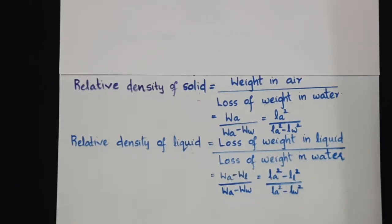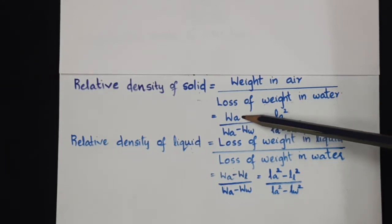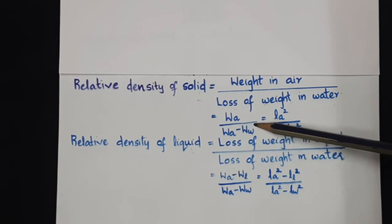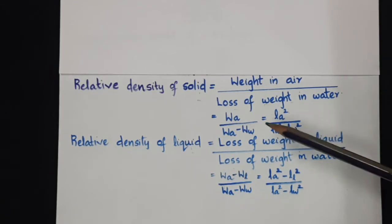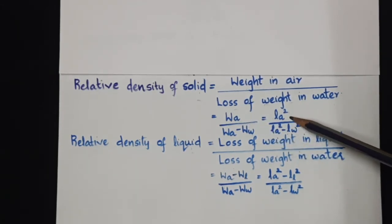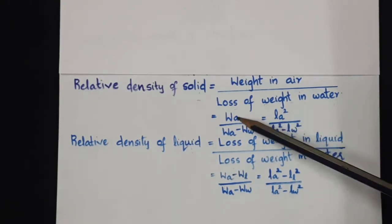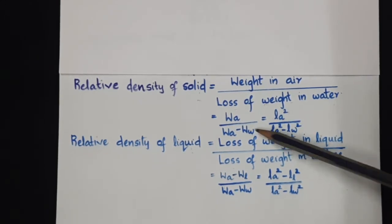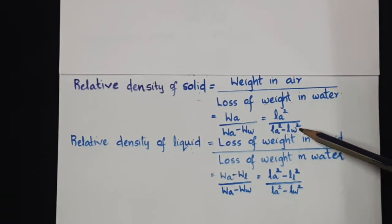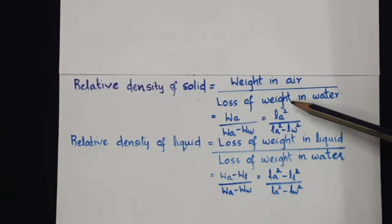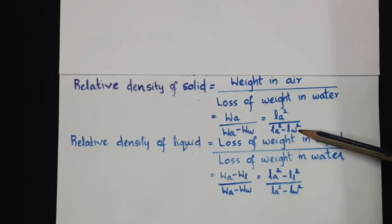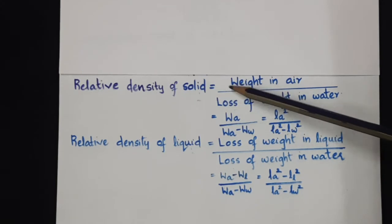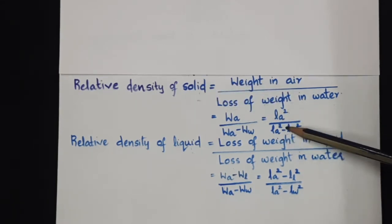The relative density of a solid is defined as weight of a body in air divided by the loss of weight in water. We have already seen that weight is directly proportional to the square of the loop length in the Melody String apparatus. So WA corresponds to LA square and weight in water corresponds to LW square. If LA is the loop length when suspended in air and LW is the loop length when suspended in water, then the relative density of the solid would be LA square divided by LA square minus LW square.